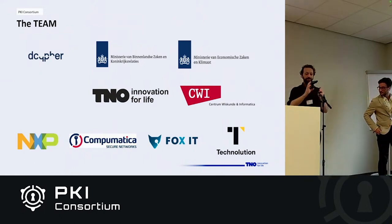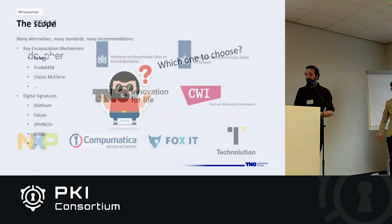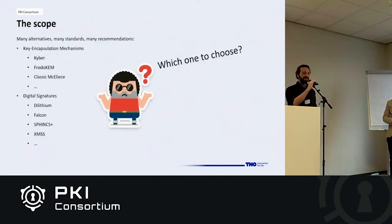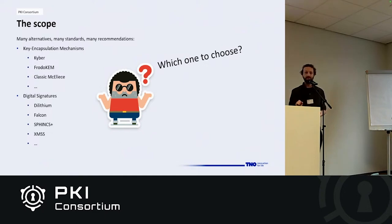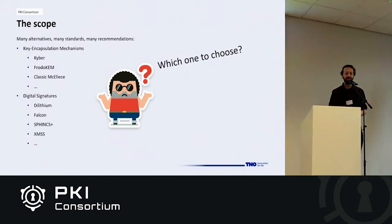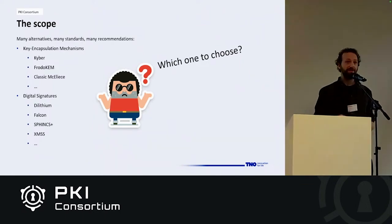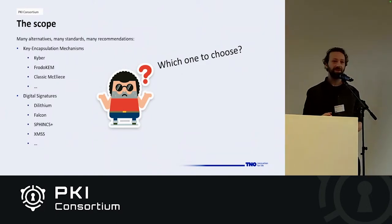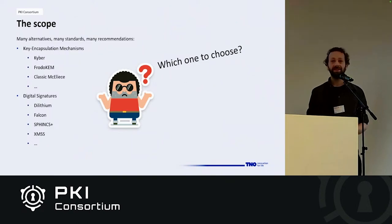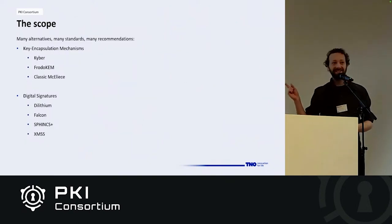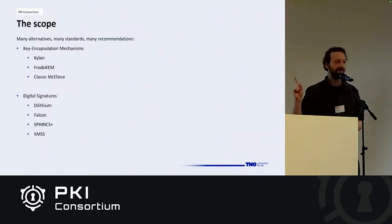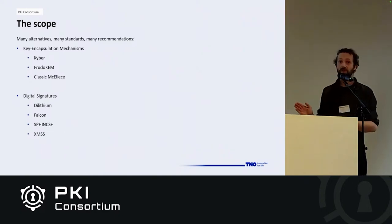Thanks, Alessandro. I'll take you quickly through the steps we've taken so far, what we plan to do in the future, and some considerations along the way. The first step was determining the scope — which algorithms to include. For KEMs, we selected Kyber as the NIST-chosen, well-performing candidate; FrodoKEM as a slightly more conservative lattice-based variant also being standardized by ISO; and Classic McEliece as the most conservative and mature option, which is code-based rather than lattice-based, adding diversity to the selection.